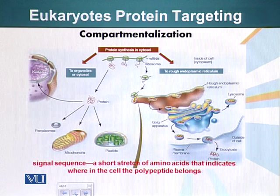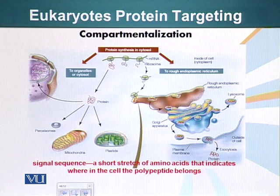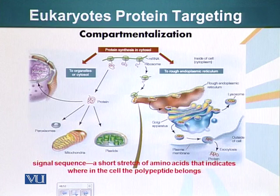The protein is then transported inside that particular organelle. Proteins that are destined for lysosomes, or which have to be secreted out or embedded in the plasma membrane — all those proteins, while they are being made, once protein synthesis starts, the whole process comes to a halt until the ribosome lands on the surface of the rough ER. And then the process continues.